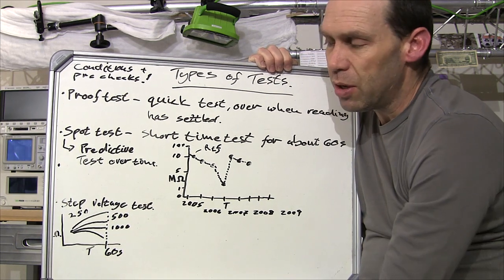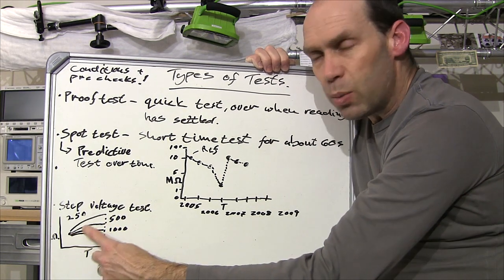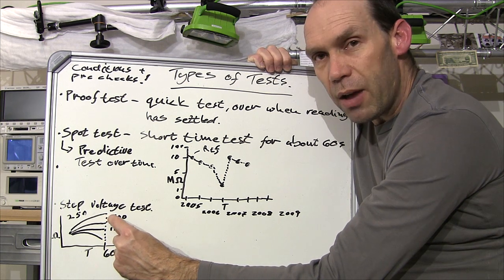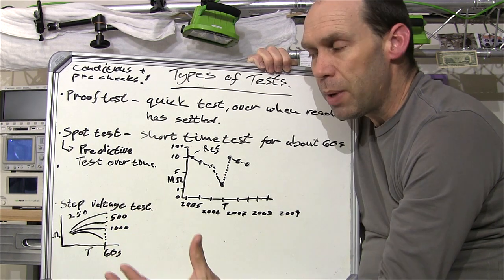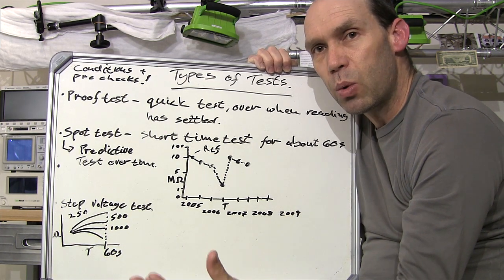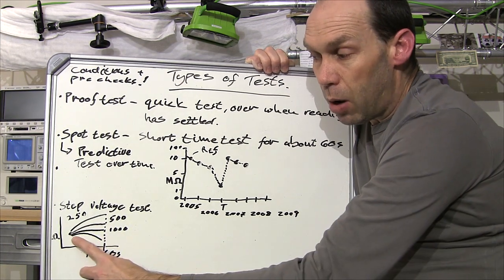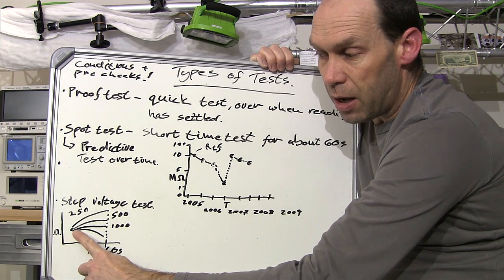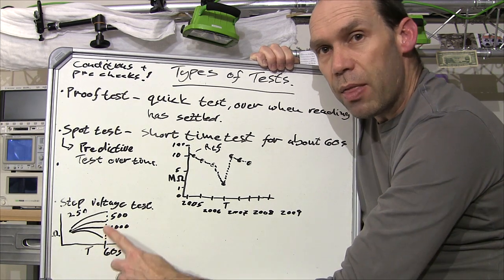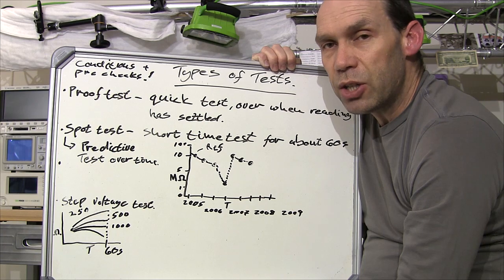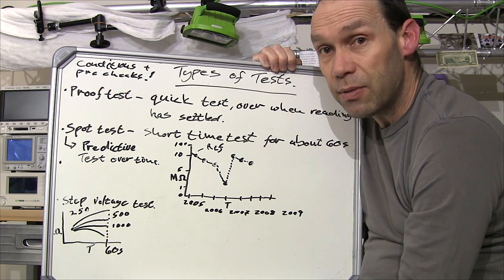Now ideally what you want in a graph like this is for all these ones to kind of trend towards the higher reading, but that might not be the case because again it'll depend on the equipment and the age of the equipment and the insulation. But ultimately what you don't want to see is a graph that kind of falls up and then drops off. That's an indication of your insulation that's starting to fail or has failed.